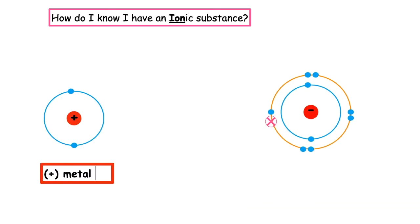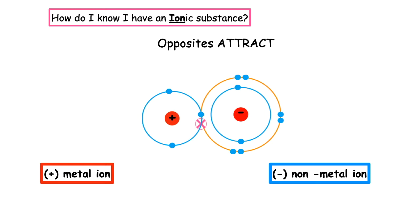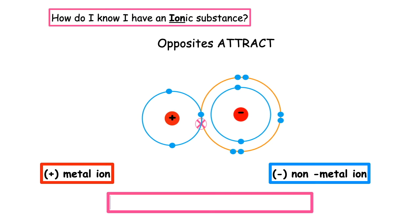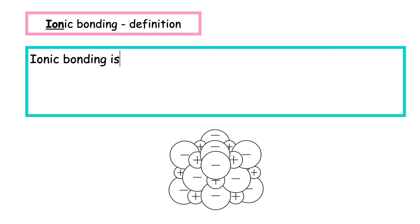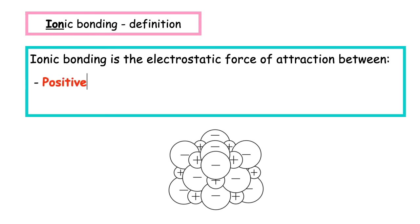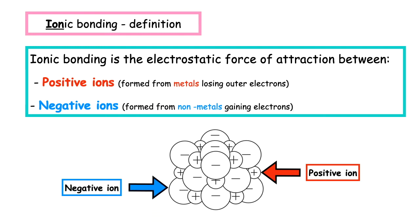The positive metal ion is attracted to the negative non-metal ion. Opposites attract. This is an electrostatic force of attraction between the oppositely charged ions. Ionic substances are more commonly known as salts. Ionic bonding is the electrostatic force of attraction between positive ions, which are formed from metals losing outer electrons, and negative ions, which are formed from non-metals gaining electrons.